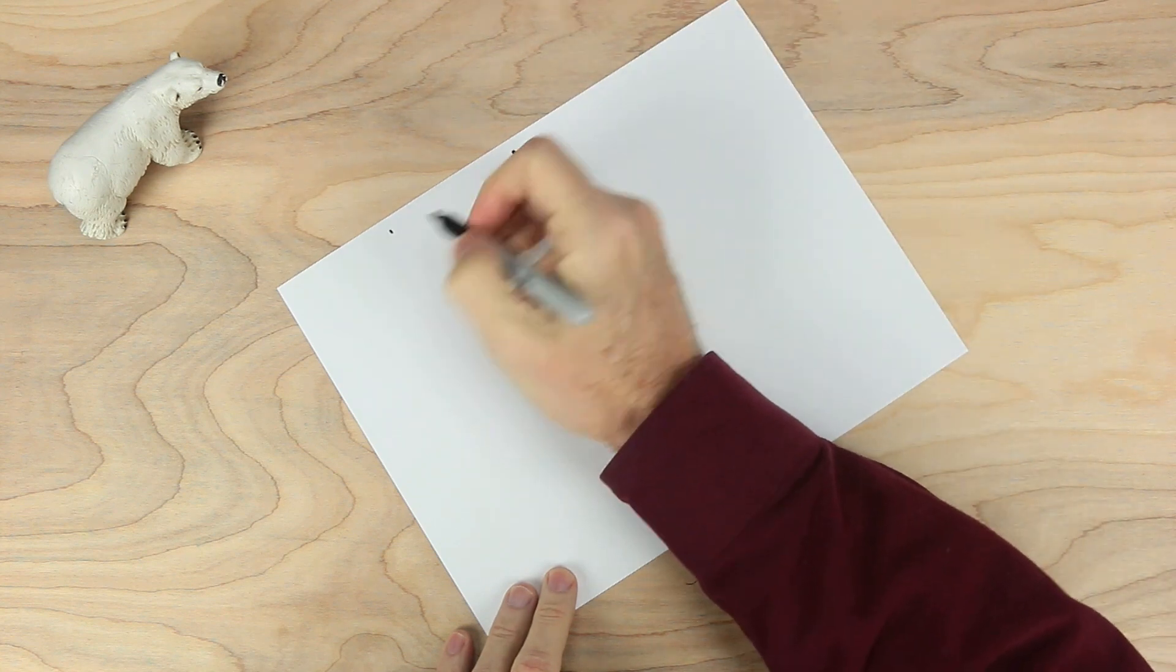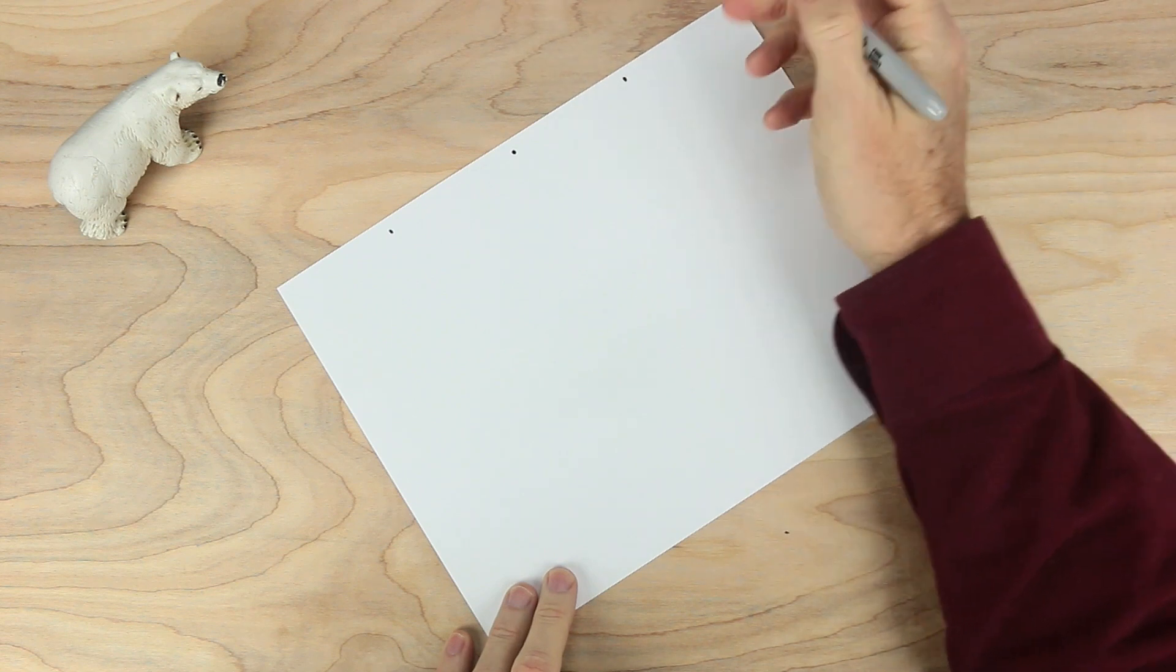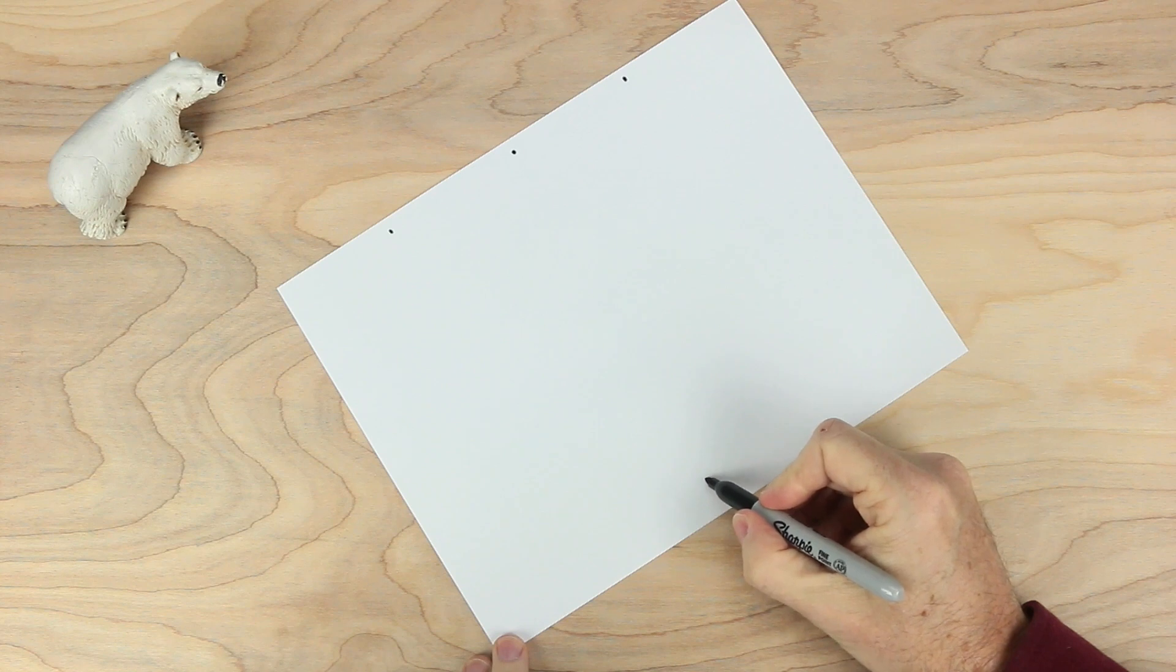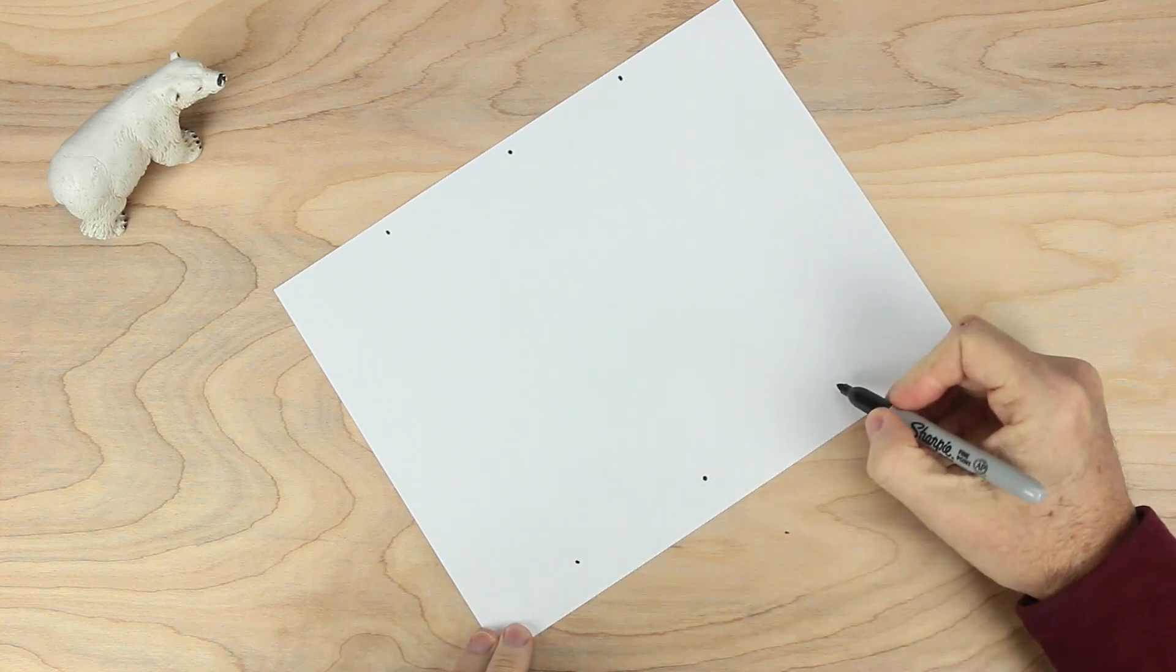And then one about halfway between there and one edge, and the same on the other side. Let's go down to the bottom, not at the very bottom, just a little ways up. A dot, halfway again, and another halfway.